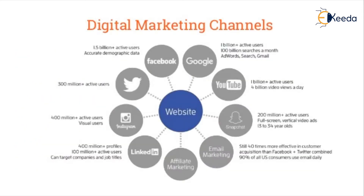So what are these digital marketing channels that achieve all these objectives? They can be broadly categorized into search engine, social media, email marketing, and affiliate marketing. All these channels have a central purpose of guiding customers towards the website, store, or unified platform where the company wants customers to come and learn or make a purchase. Search engines, represented here by Google, have 1 billion-plus active users with about 100 billion searches happening every month, making search engine optimization a great starting point for any digital marketing campaign.